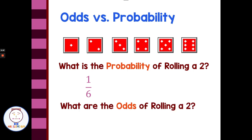Odds would be different. Odds talk about favorable versus unfavorable — so we're looking at one side that's a 2 versus five that are not. We're going to concentrate on probability, where we're looking at one favorable outcome out of six possibilities.